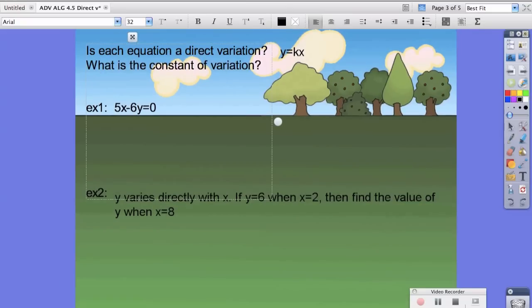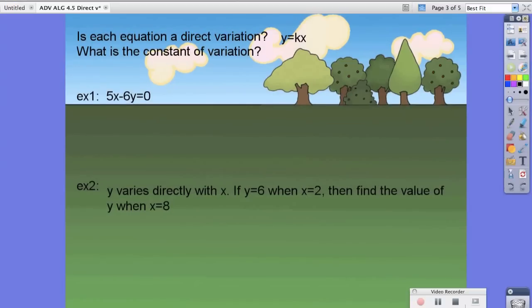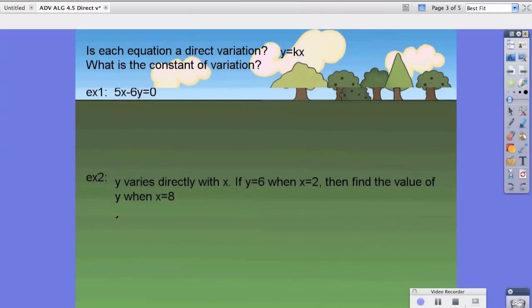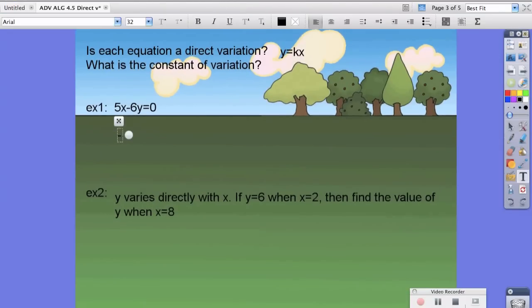So what we're going to do is we're going to take each one of these problems and try and solve it for y equals kx. So the first thing we're going to do for example one is to subtract 5x from both sides. So we're going to subtract 5x from the left side and from the right.